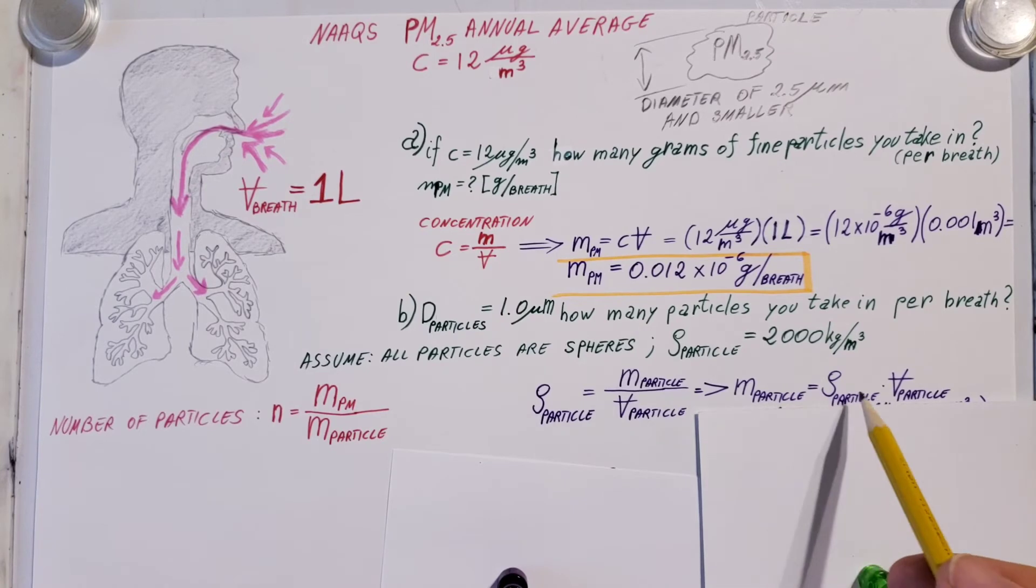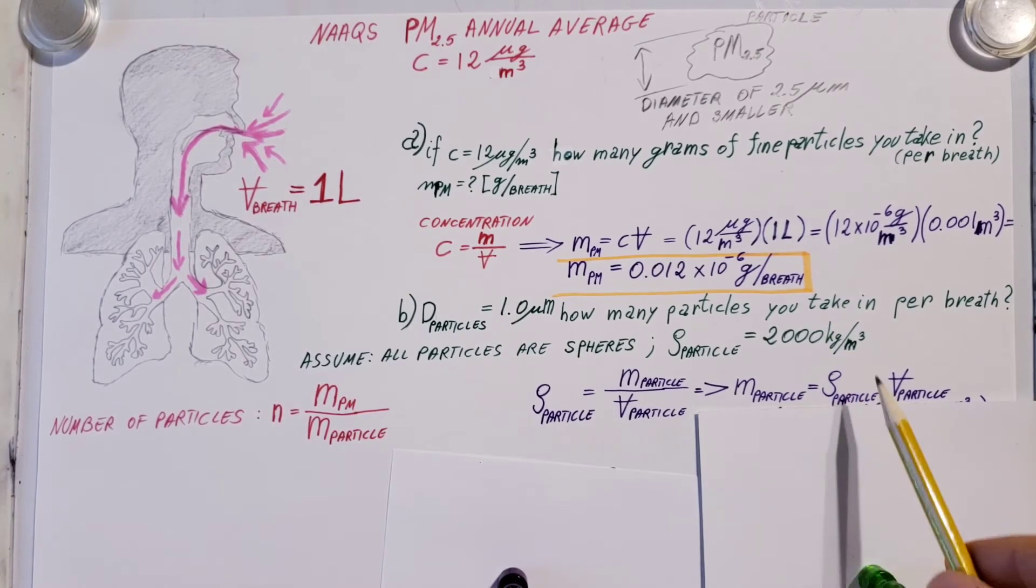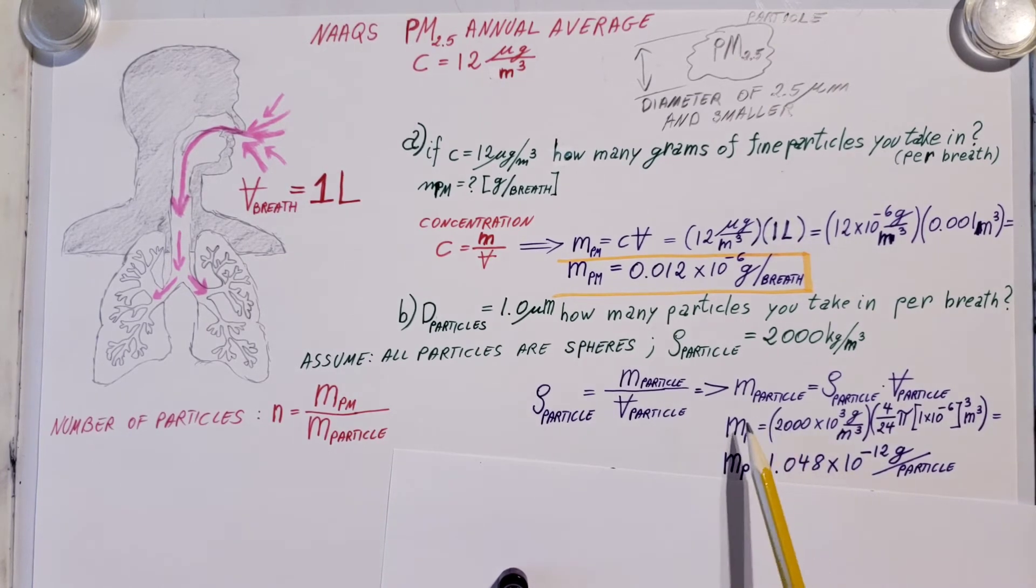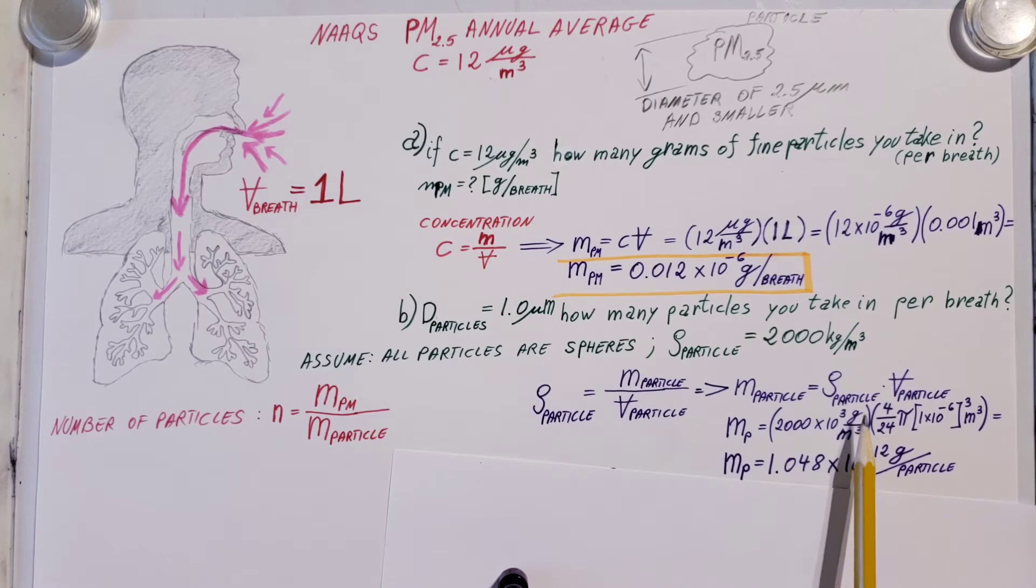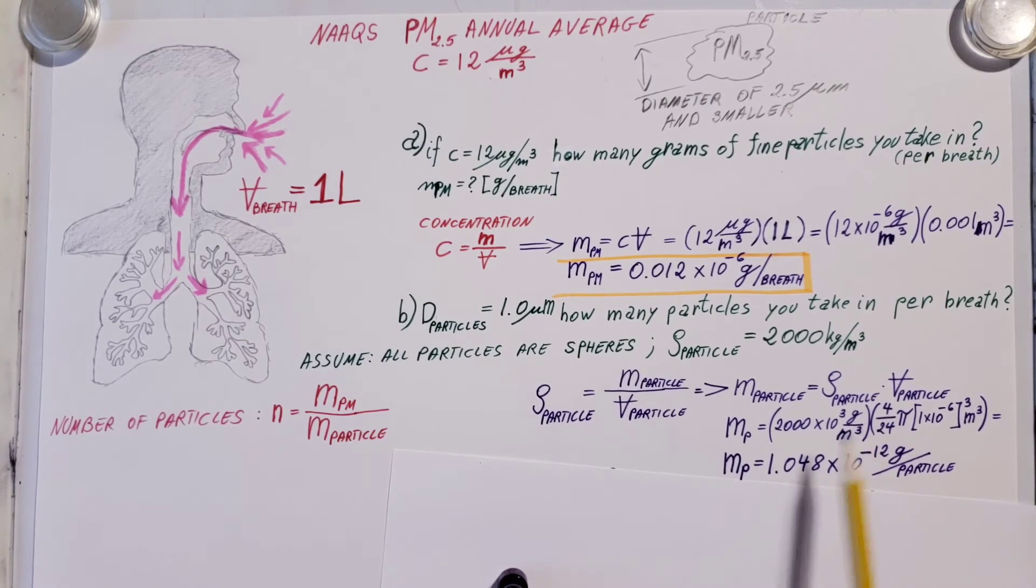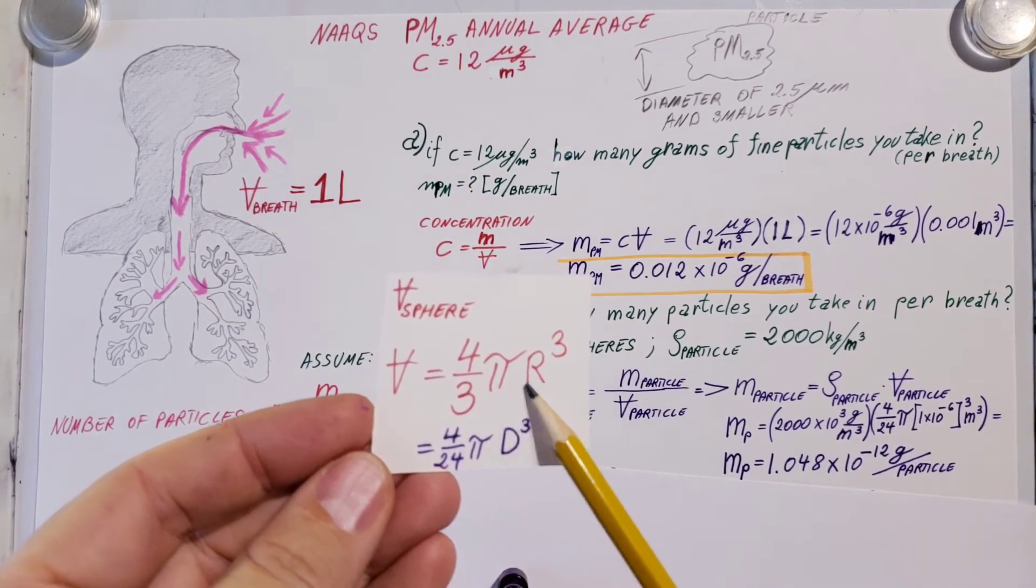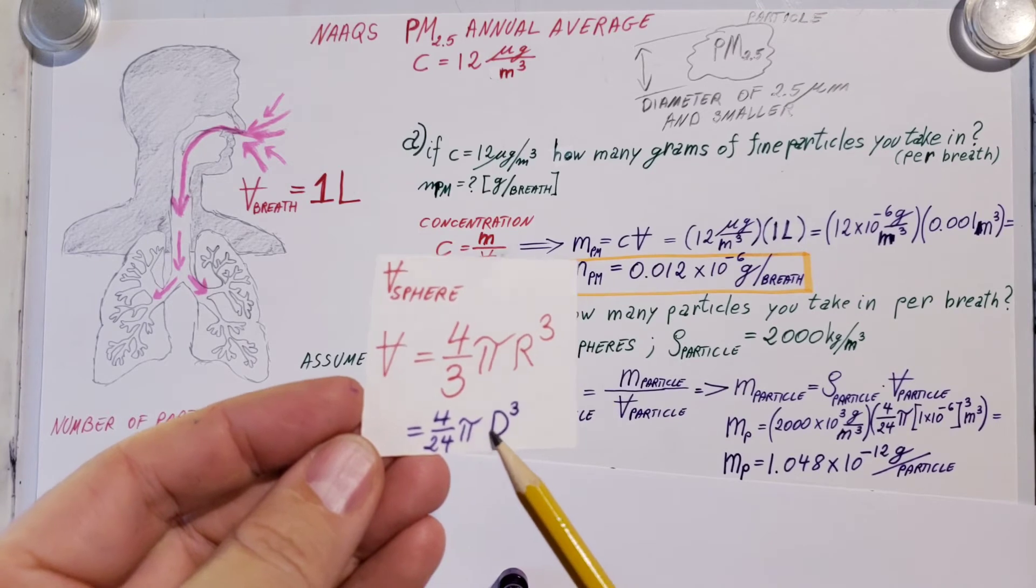Here it is when we solve for it: mass equals density times volume. Mass of the particle equals the density, which is given right here—just make sure you replace the k from kilogram; the k is 10 to the third, we want grams per meter cubed—and volume of the particle is basically volume of a sphere. Here's the formula with the diameter.